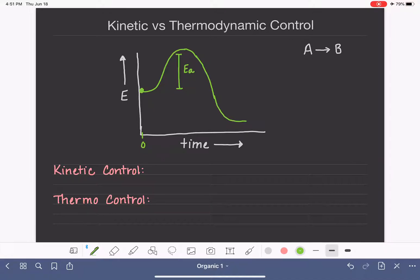I'm drawing this as an exothermic reaction. So here's reactant A, and here is the product B. And this is just a basic energy diagram for a simple one-step exothermic reaction.